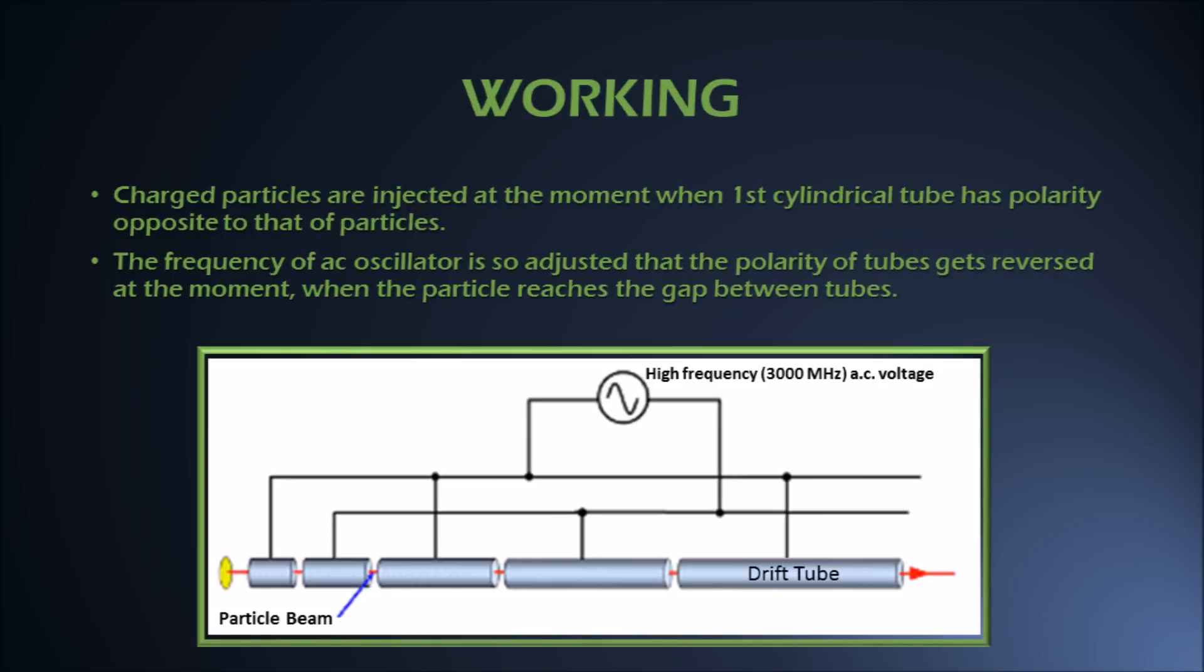Using oscillator, the polarity of both the sets of cylindrical electrodes can be reversed after every half cycle of AC power supply. The charged particles are injected at the moment when first cylindrical electrode has polarity opposite to that of particles, so that the particles are attracted towards first tube.